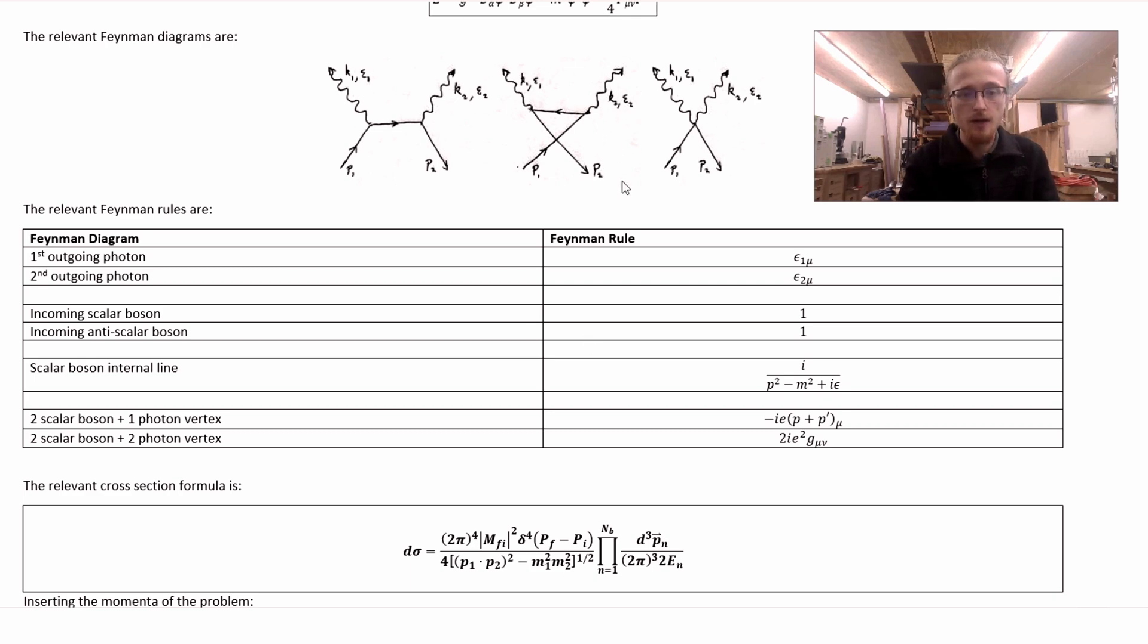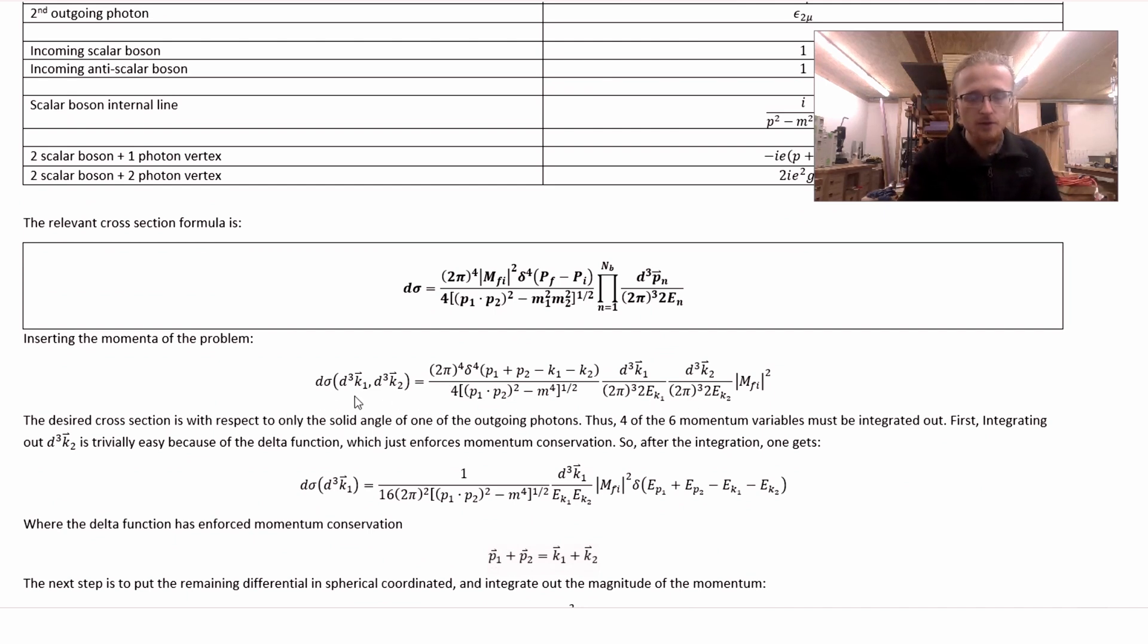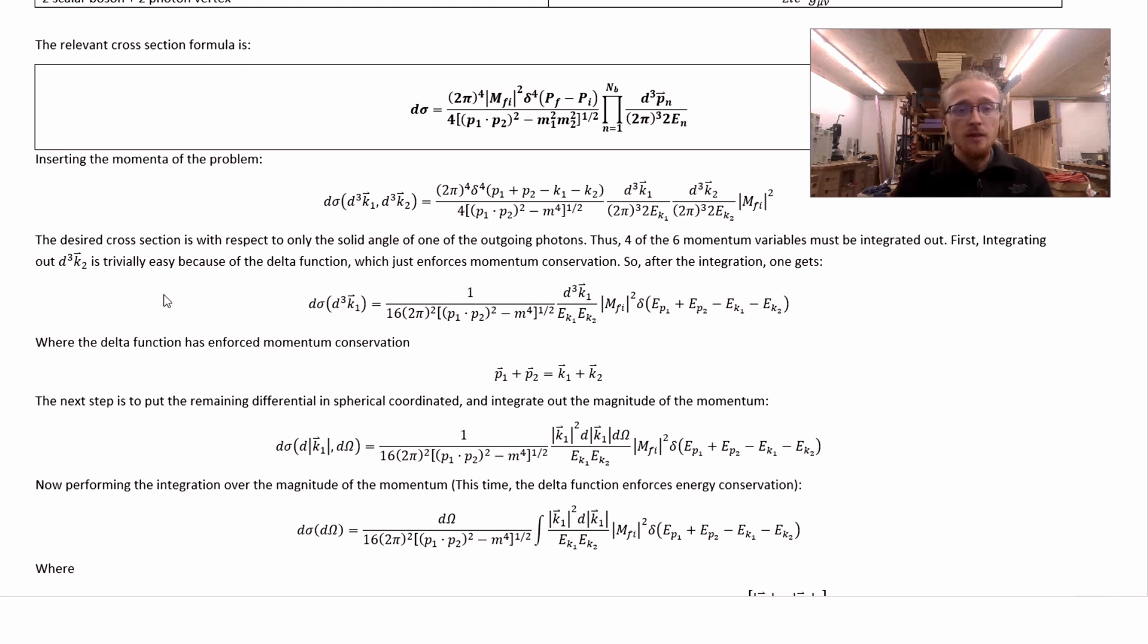Now, if we plug in the momentum vectors that are relevant to this problem into this formula to make it more specific, we get down to this result here, where I've used this function argument notation to indicate what differentials this d sigma still depends on, because that'll change as we proceed through integrating over some of those variables. With the momenta specific to this problem inserted in, we can proceed to actually processing this differential scattering cross-section formula into the result that we're looking for. The desired differential scattering cross-section that we are looking for isn't just any old differential scattering cross-section for pair annihilation. It's specifically the one that's analogous to the more famous result I was talking about in standard QED, so that we can compare. And that differential scattering cross-section is with respect to the solid angle of one of the outgoing photons.